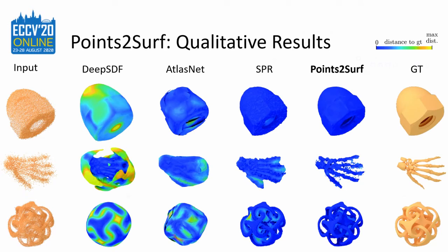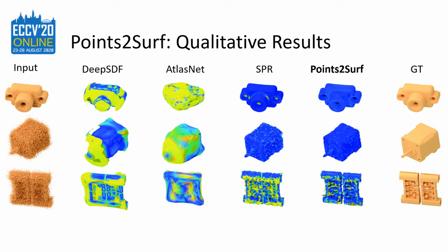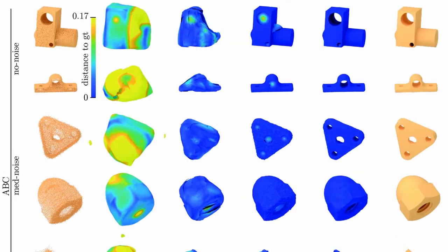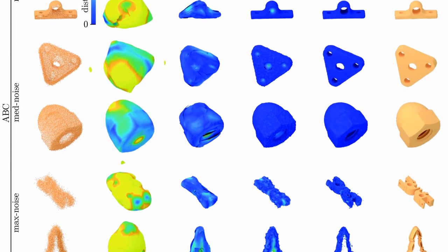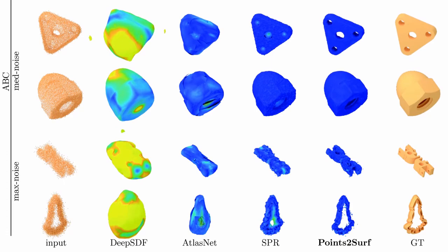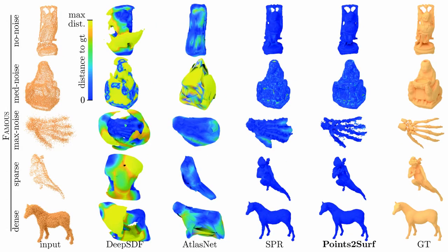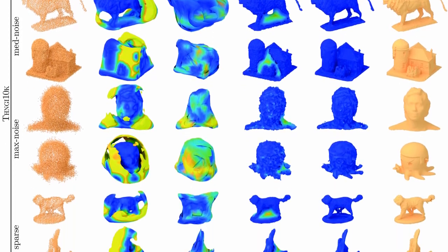Let's have a look at some qualitative results. The first row is an object from the ABC dataset, the second row is from the Famous dataset, and the third row is from the Thingy 10K dataset with similar properties as the Famous dataset. You can see that our method performs much better on cavities and fine details. The downside is that Points to Serve produces topological noise in some cases and takes longer to compute.